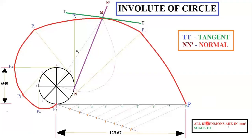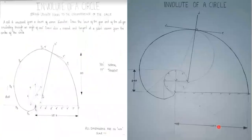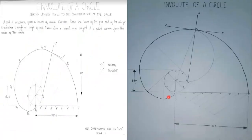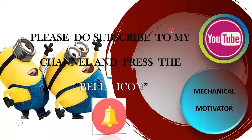If you have any doubts, type them in the comment section. Once you complete the diagram, the curve, tangent, and normal should all be drawn very dark — only these three things should be dark. Thanks for watching this video and have a great day. Don't forget to subscribe to the channel Mechanical Motivator to get all the videos I upload.